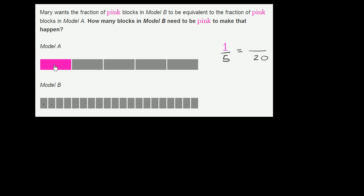And you see that this is the exact same length. Model B is the exact same length as Model A. And so for every block that you have in Model A, you must have four in Model B because we went from five sections to 20. So we're essentially multiplying by four.